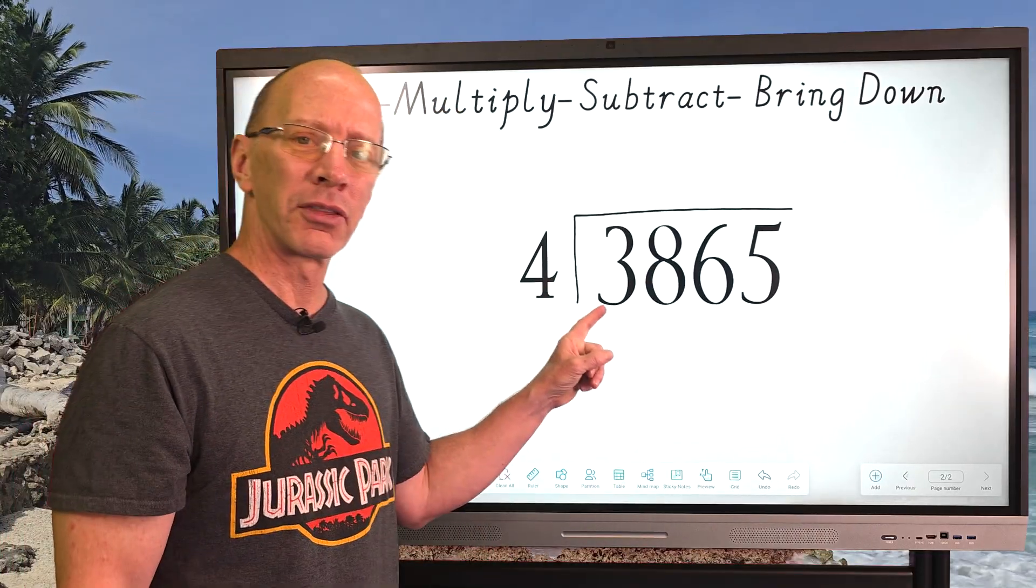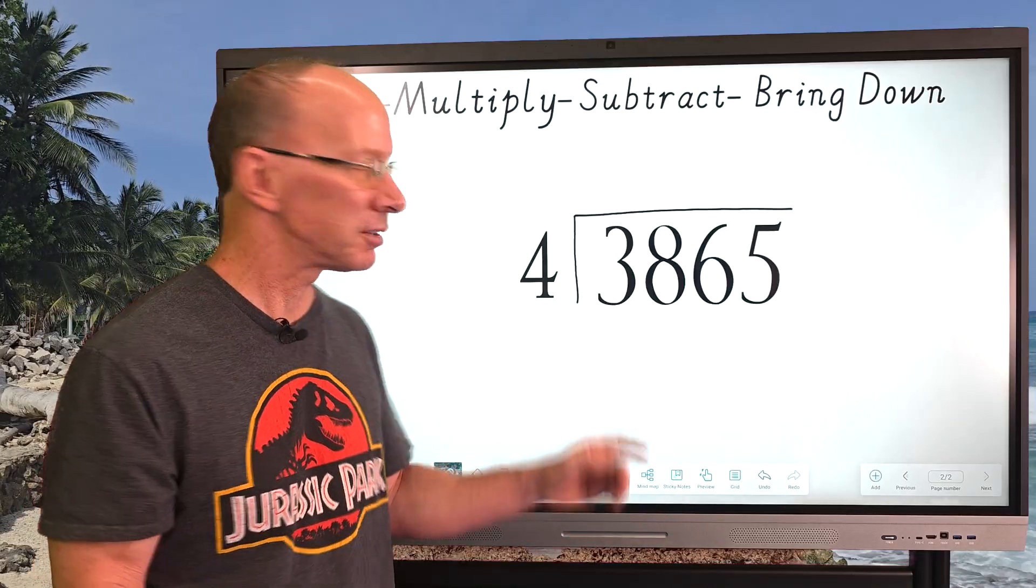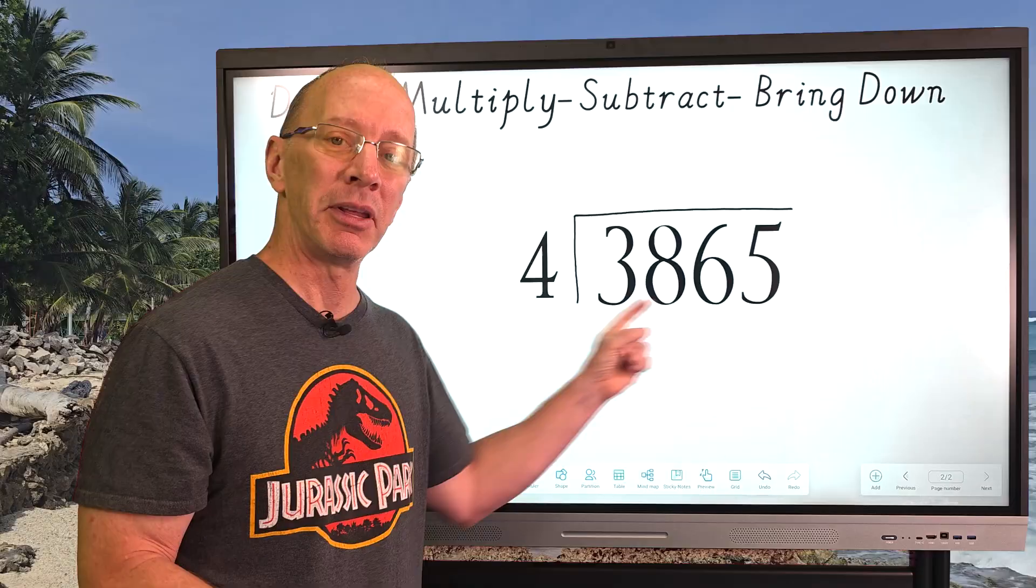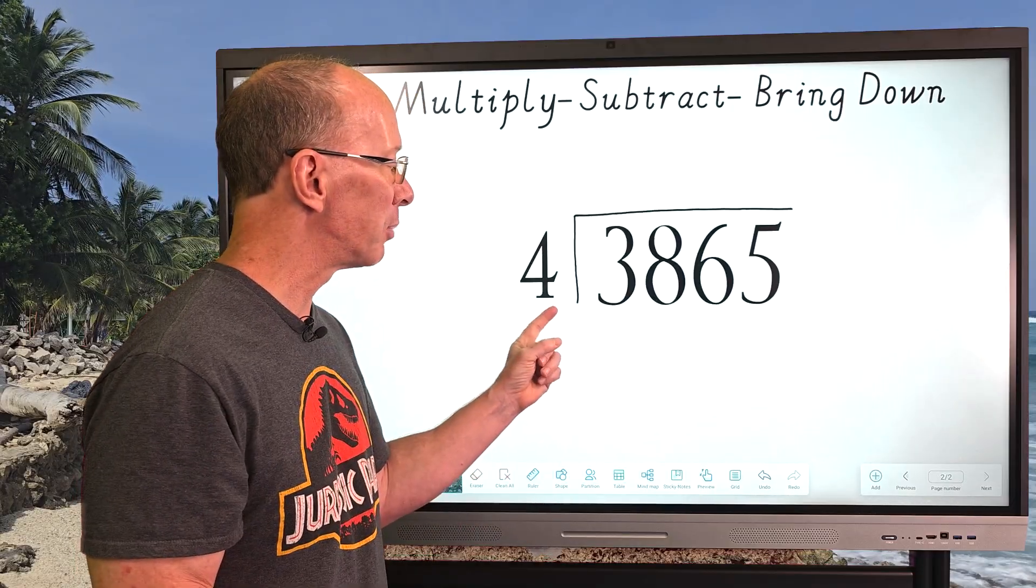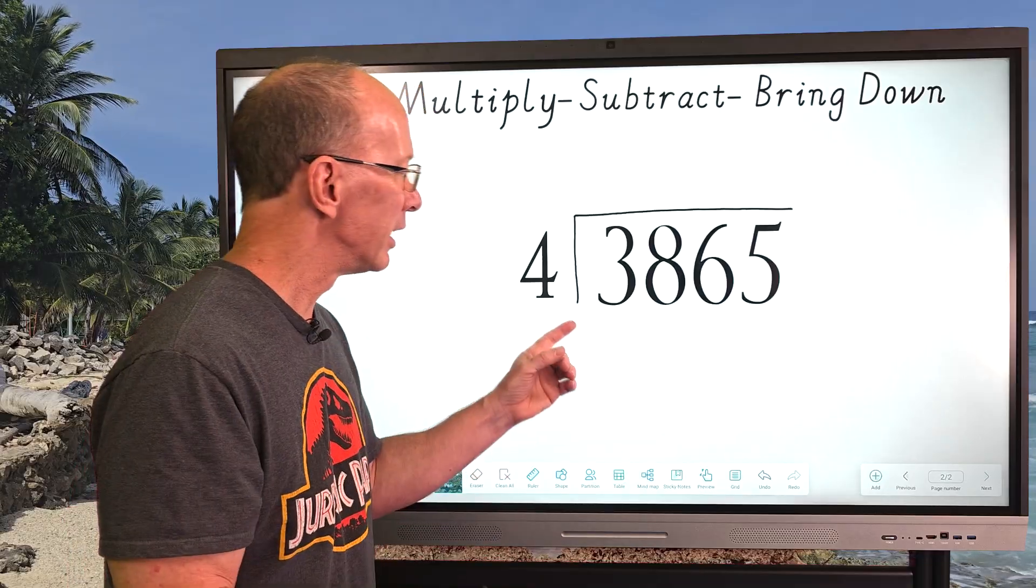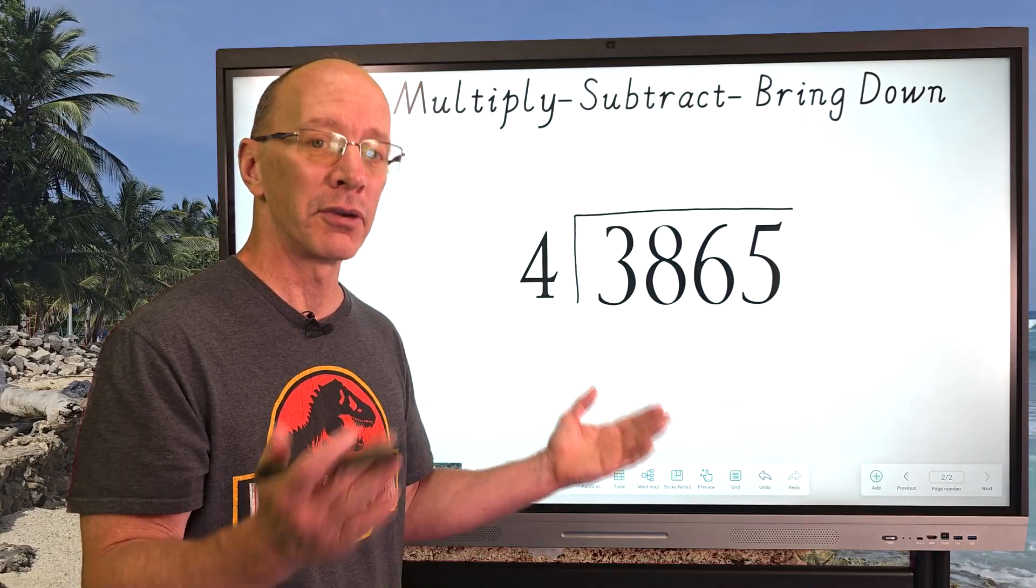Can I put four into three? You can't, can you? Three is too small. So we need to work with the next number, and that would be 38. How many times can I put four into 38? So it's always good to know your multiplication. So nine times four would be 36. Ten times four would be 40.